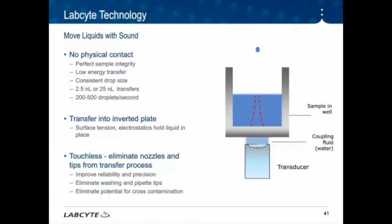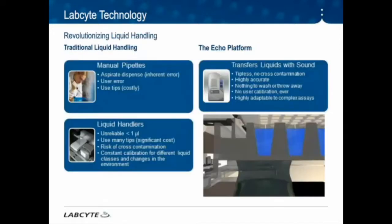There is no physical contact — it's touchless, eliminating tips and nozzles. Because the drop is ejected up, the destination plate is inverted, and surface tension and electrostatics hold the liquid in place. The transfers can be either wet or dry. This technology is revolutionizing liquid handling. Compared to manual or old-school liquid handlers, the inherent error, unreliability, calibration requirements, and cost of tips are eliminated. The Echo platform maintains the flexibility of manual pipetting to create highly complex assays much faster and without RSI to the scientists.